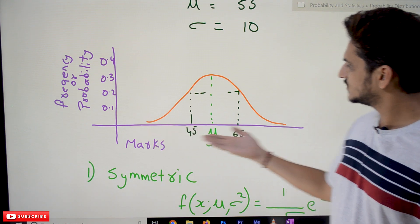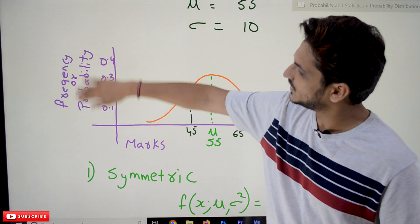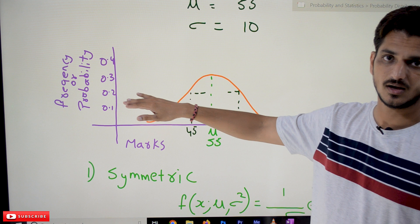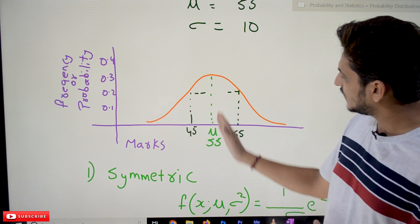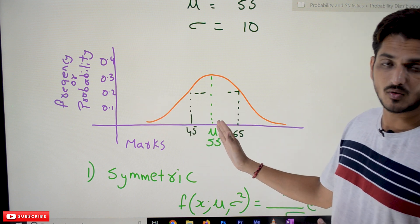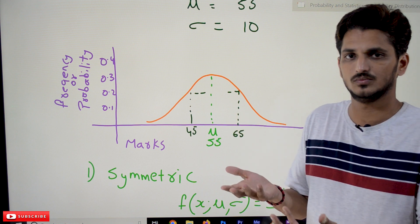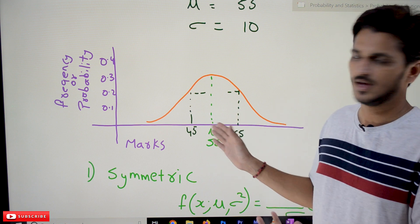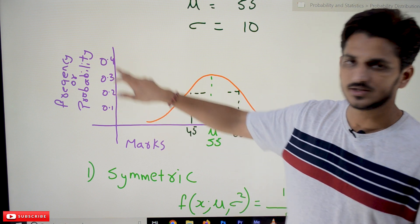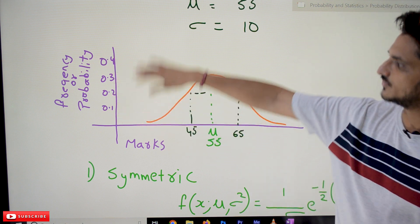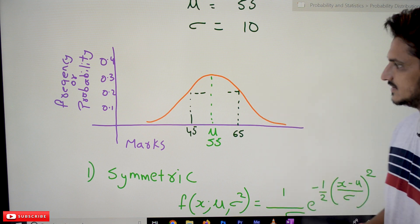On the x-axis we take the marks; on the y-axis we take the frequency or probability values — how many students got a particular marks value, say 55, that is the probability value. You can plot values like 0.1, 0.2, 0.3 as frequency or probability. These discussions were made in our previous classes.